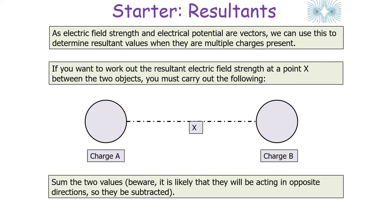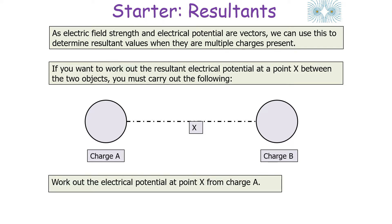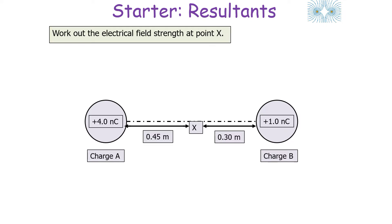Beware — the field strengths are likely to be acting in opposite directions, each acting towards that point, so they will probably be subtracted from each other even though we say we're summing the values. It's important to carry out all those processes to get your resultant. For electrical potential, you do the same: work out the electrical potential at point X from charge A, then from charge B, and sum the two values. Let's look at an example.